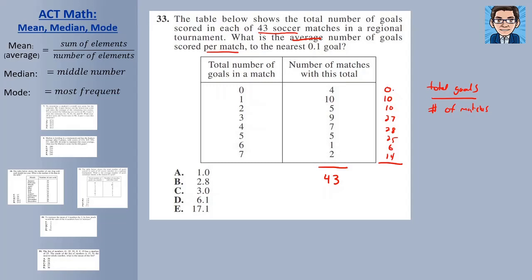So now if we add up this whole column here, we're going to get 120 total goals. So we've got 120 total goals divided by 43 games. And that gets us 2.79. We went into the nearest tenth. 2.8 is going to be our closest. And our answer is going to be B.